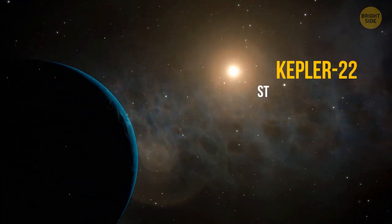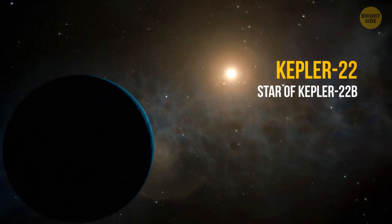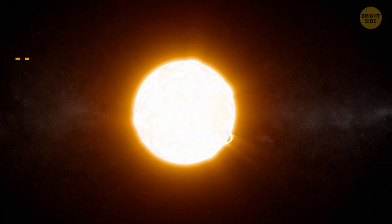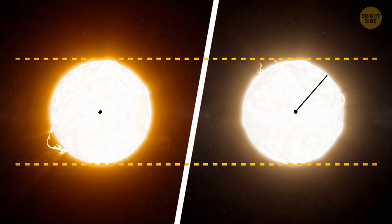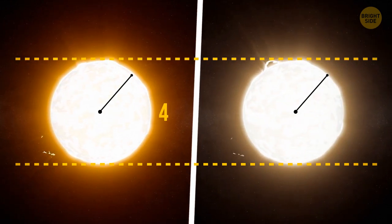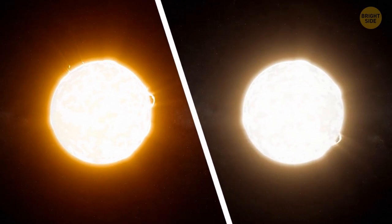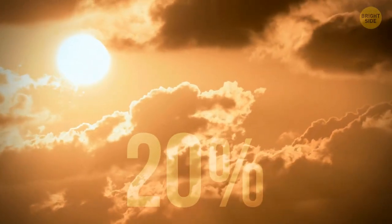Kepler-22, the star of Kepler-22b, is a yellow dwarf. It's very similar to our Sun. The same size, the same radius, even the age is almost the same, 4 billion years. The difference is only in luminosity. It's about 20% dimmer than the Sun.